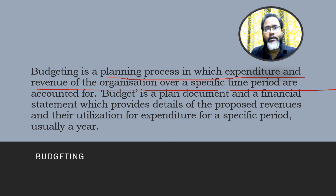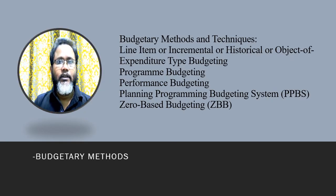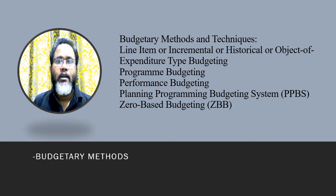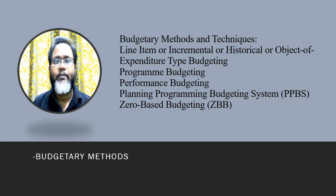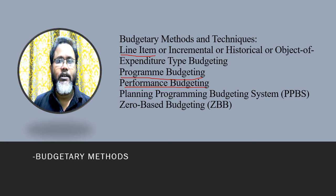There are several budgetary methods. The first is the line item budget or incremental budget. The second is the program budget. Third is the performance budget. Fourth is PPBS — Planning Programming Budgeting System. And lastly, there is Zero-Based Budgeting, or ZBB.